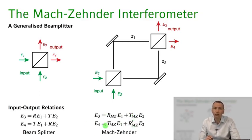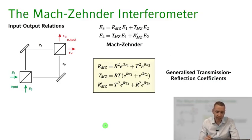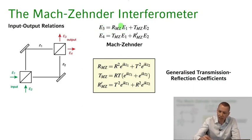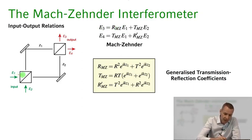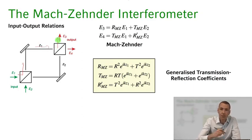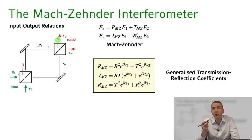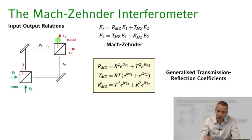What are these generalized reflection and transmission coefficients of the Mach-Zehnder interferometer? Let's look at how light coming in on port 1 arrives at port 3. There are two possibilities. First, the light can be reflected, propagate along path Z1, and be reflected again at the second beam splitter. This gives two reflections and a phase shift e^(ikZ1), so we get r² times e^(ikZ1).